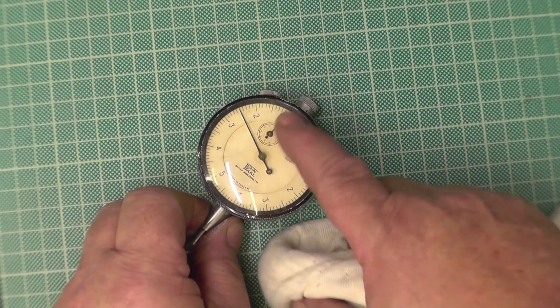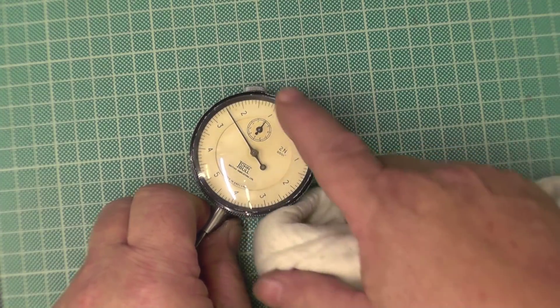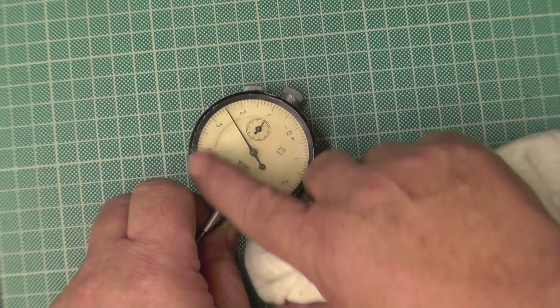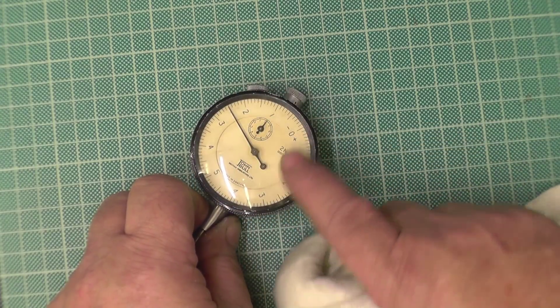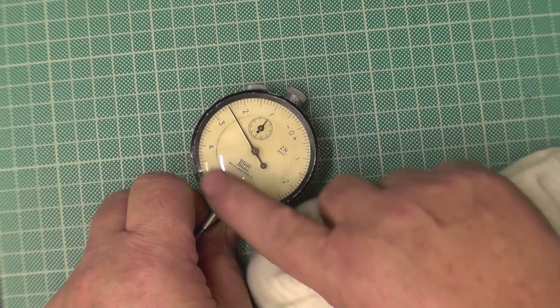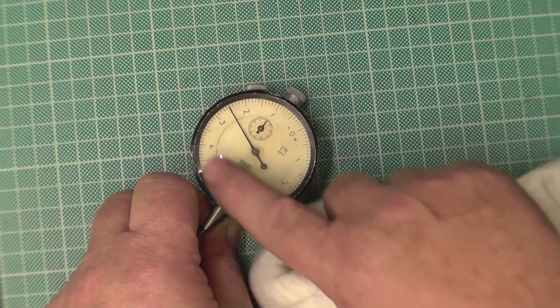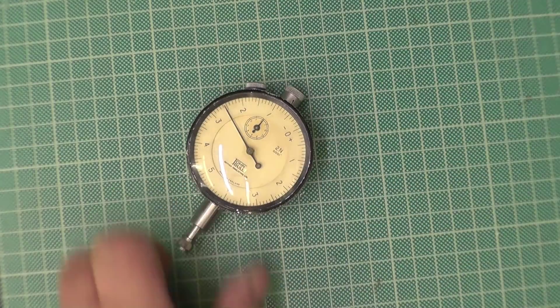This was a fairly simple one to do because it wasn't that badly scratched. Some of them I get in, they really are heavily scratched. And again, you just got to take your time. That's why I say it can take up to four hours to repair a DTI. Because every little detail counts. And there we go. Job's a job.